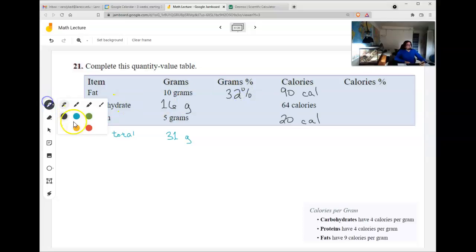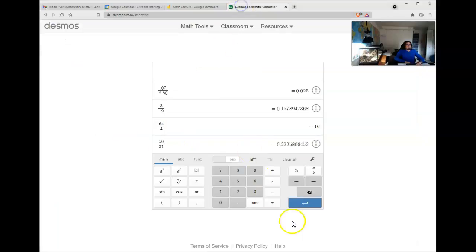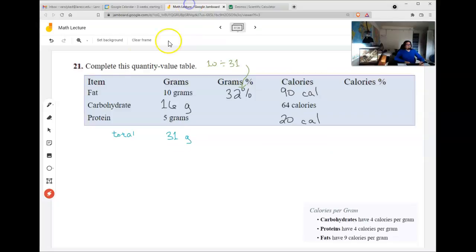Again, how did I get that 32%? I did 10 divided by 31. For the second row, it's going to be 16 divided by the total. And again, scoot the decimal point and I get about 51.6. Let's round it to 52. And how did we get that 52? That's 16 divided by 31.